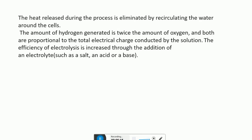Heat released during the process is eliminated or removed by recirculating water around the cells. The amount of hydrogen generated is twice the amount of oxygen because in molecular weights hydrogen is double that of oxygen, and it is proportional to the total electric charge conducted by the solution. The efficiency of electrolysis is increased through the addition of an electrolyte such as salt, an acid, or a base.